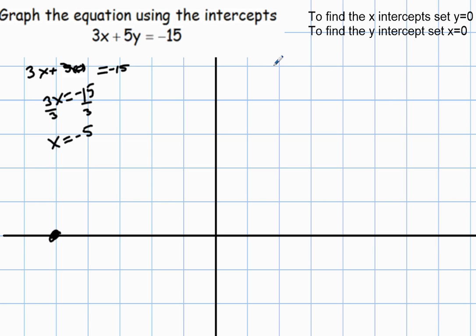The y-intercept is when x equals 0. So 3 times 0 plus 5 times y equals negative 15. If that ends up being 0, so I'm left with 5y equals negative 15.